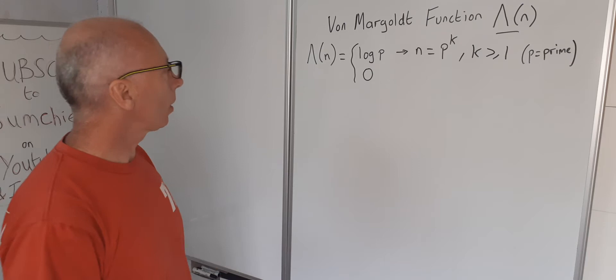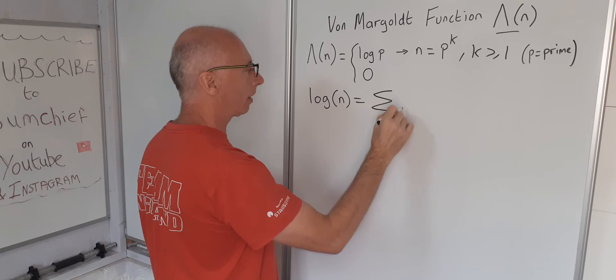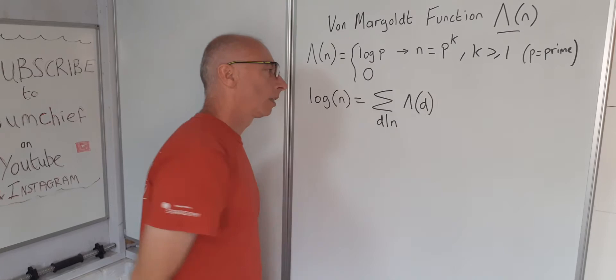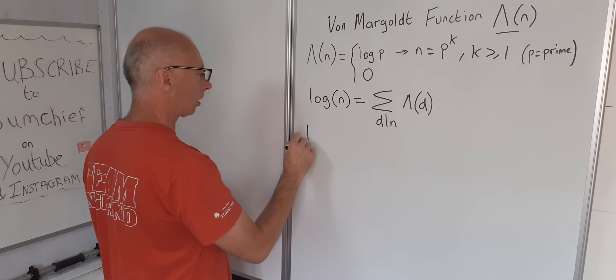The interesting property is log n equals the sum of all the divisors of n. So this property here. Now what does this mean? I think we should just go into an example straight away.